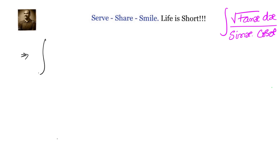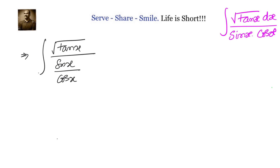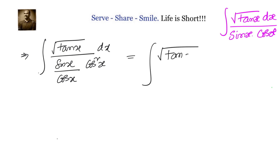We multiply and divide the denominator by cos x. When we divide by cos x in the denominator, we get sin x by cos x which equals tan x. So the denominator becomes sin x by cos x into cos squared x. This simplifies so that the numerator is square root of tan x and the denominator has tan x and cos squared x, where 1 by cos squared x is sec squared x dx.